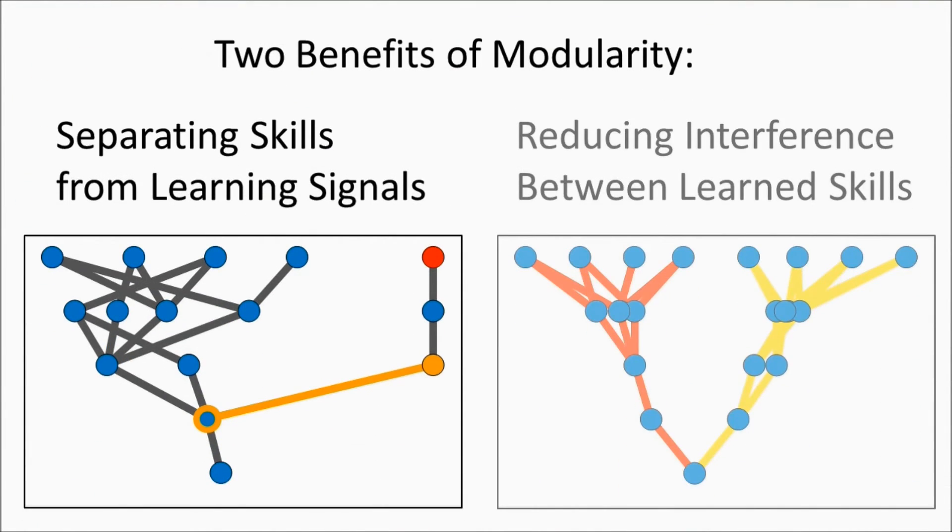We believe that the modularity that the connection cost induces has two benefits in the evolved networks. First, as evident from the network structure, modularity makes reinforcement learning more efficient by separating skills from learning signals.